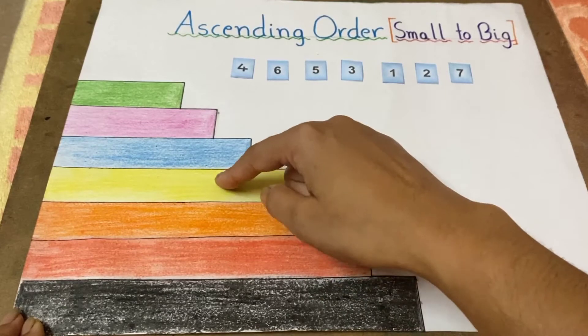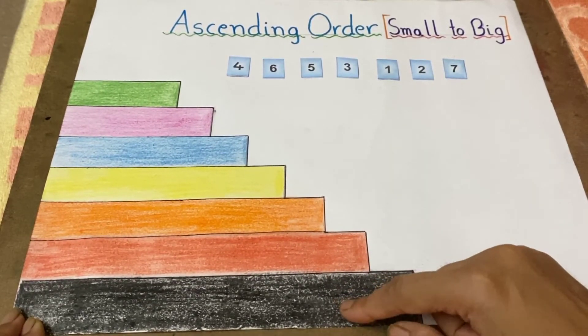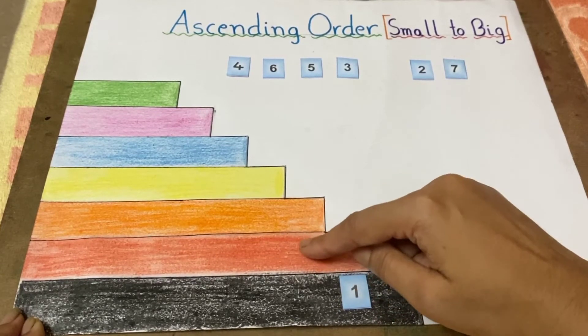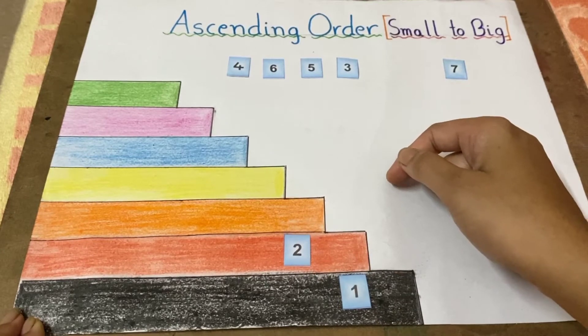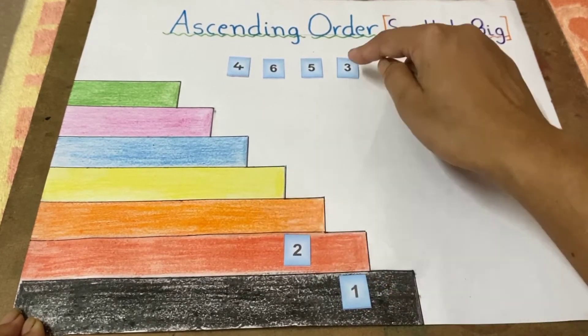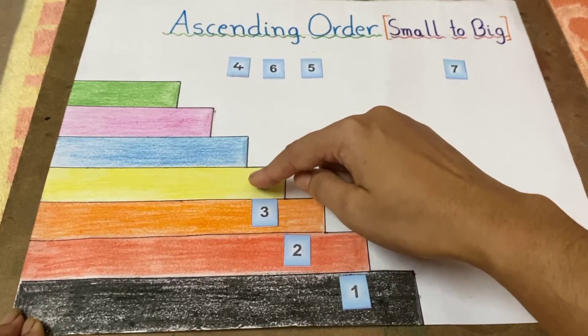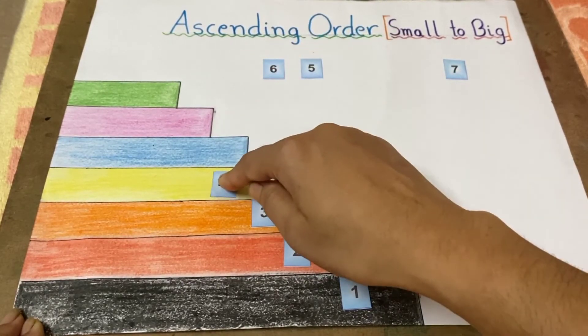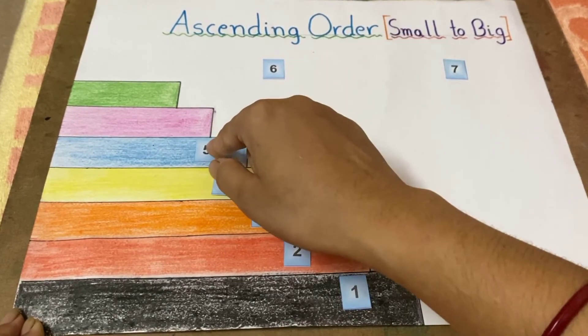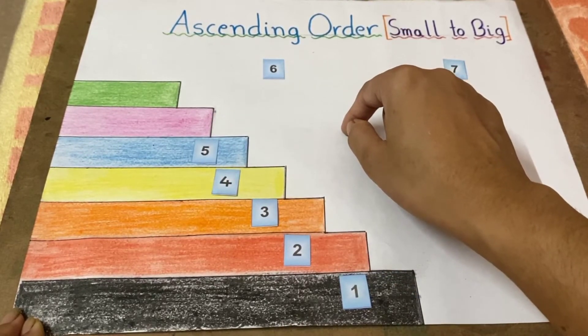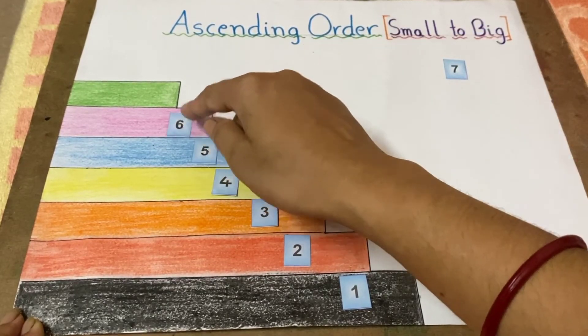The black step is number one, the red stair is number two, the orange stair is number three, the yellow stair is number four, the blue stair is number five, the pink stair is number six, and the green stair is number seven.